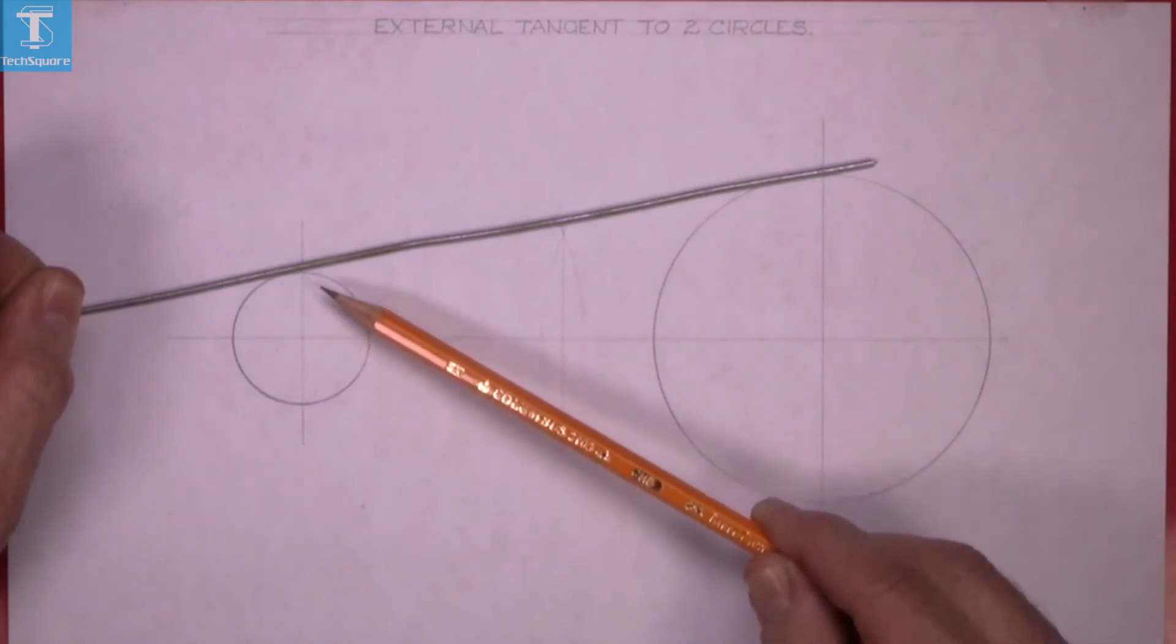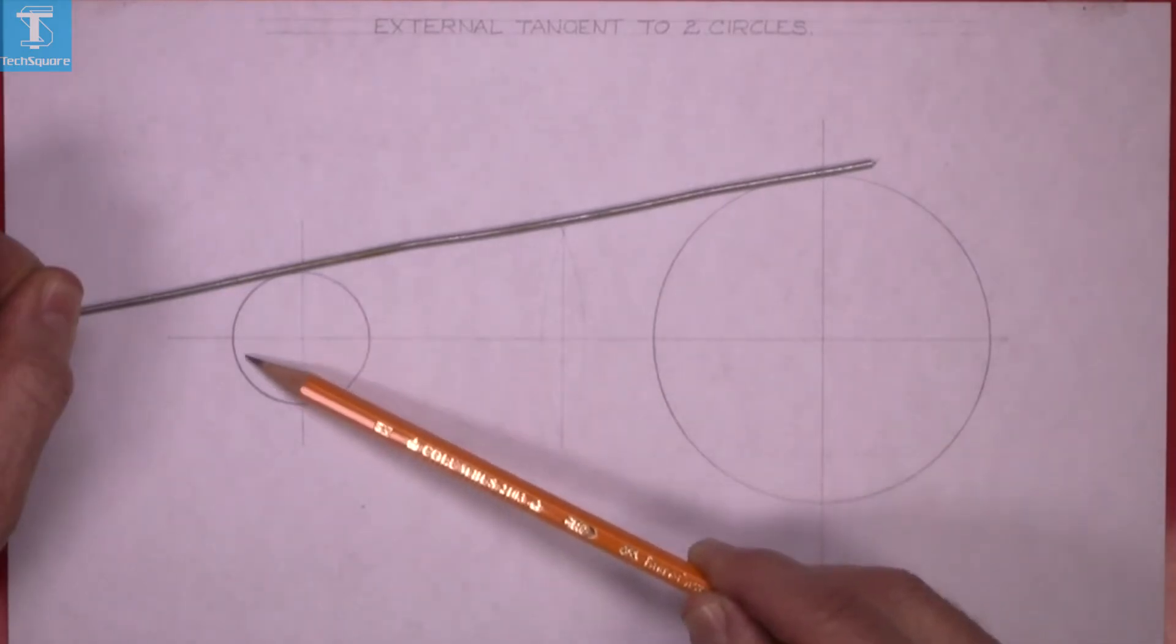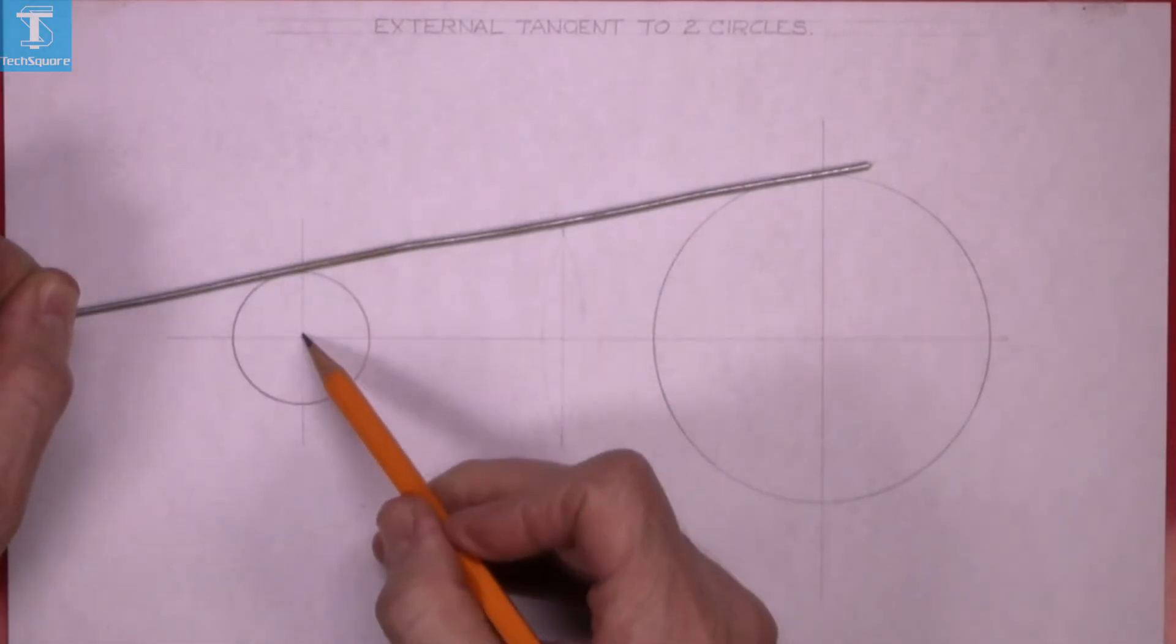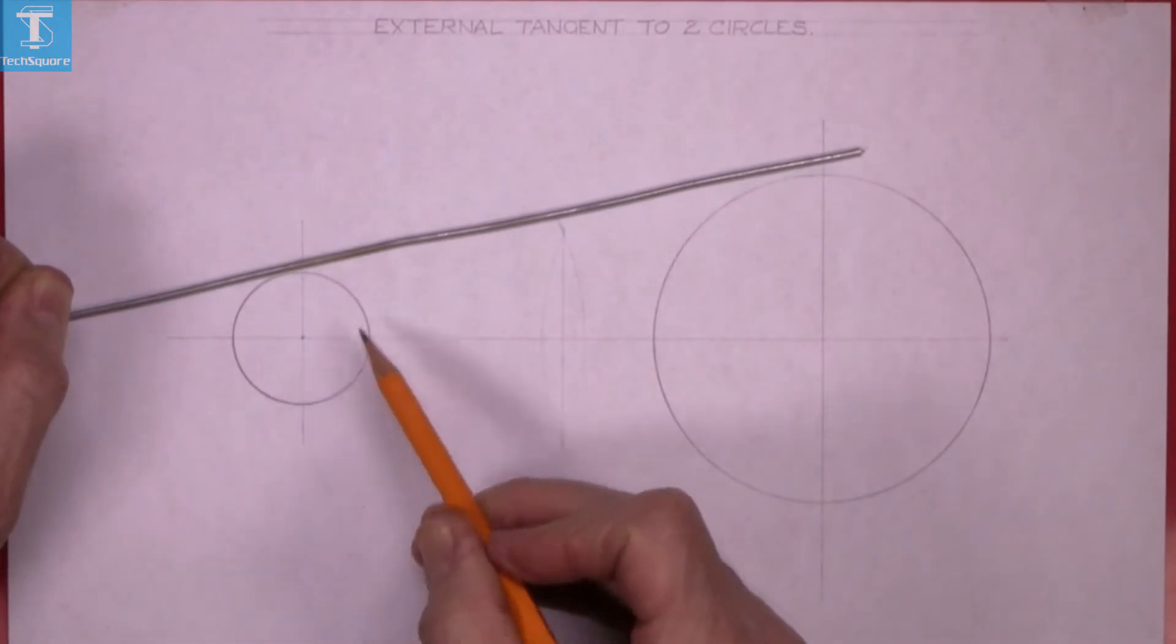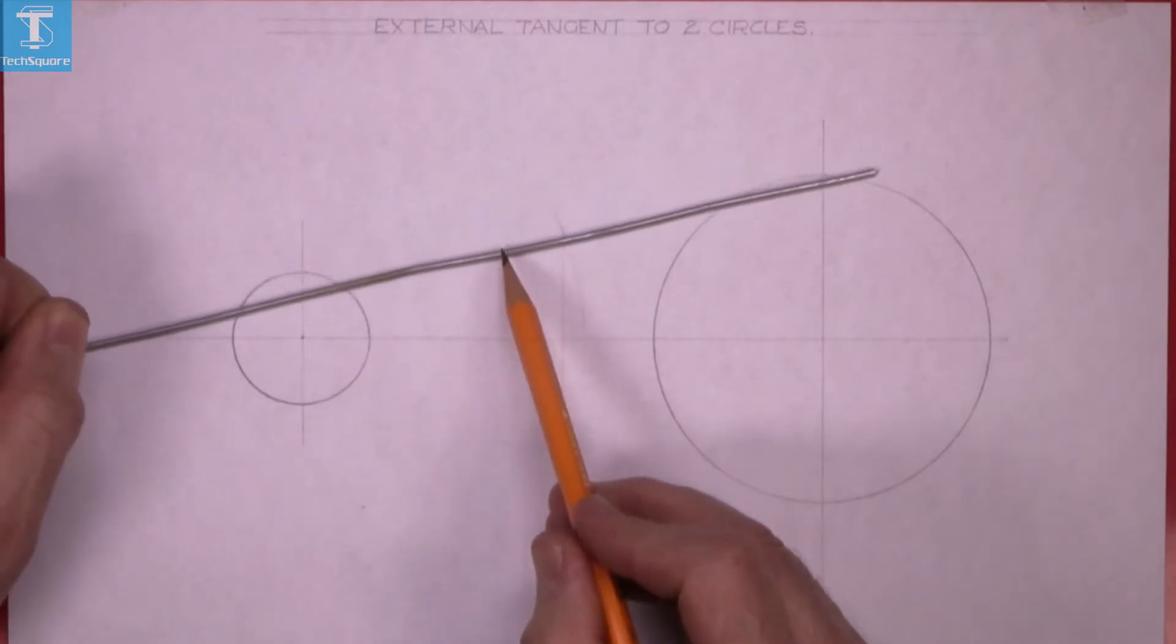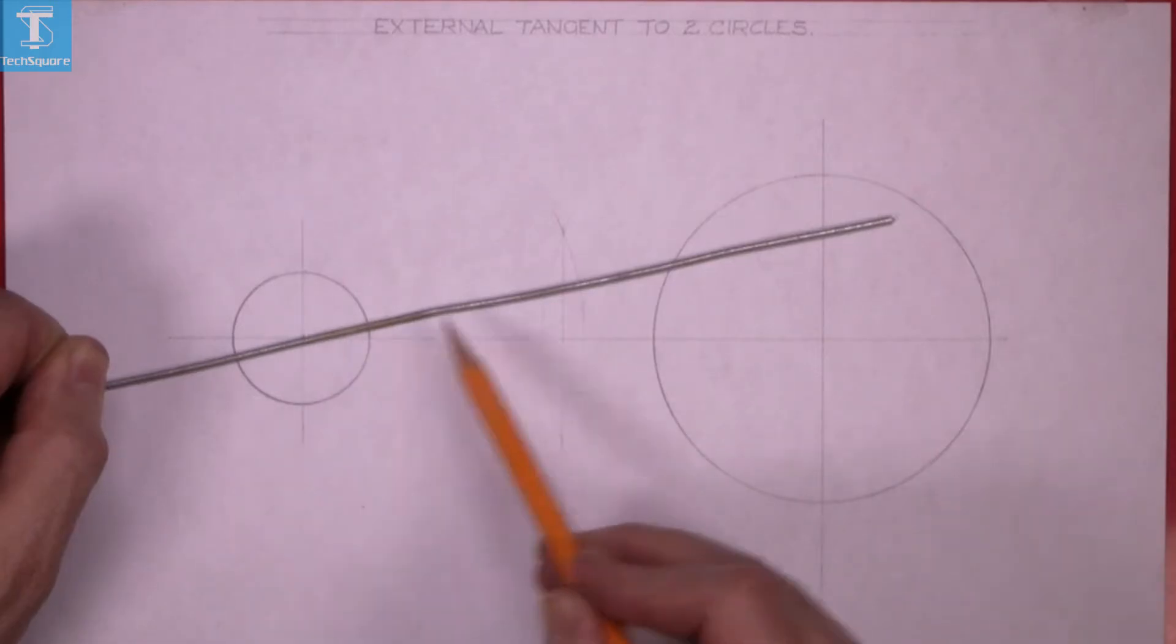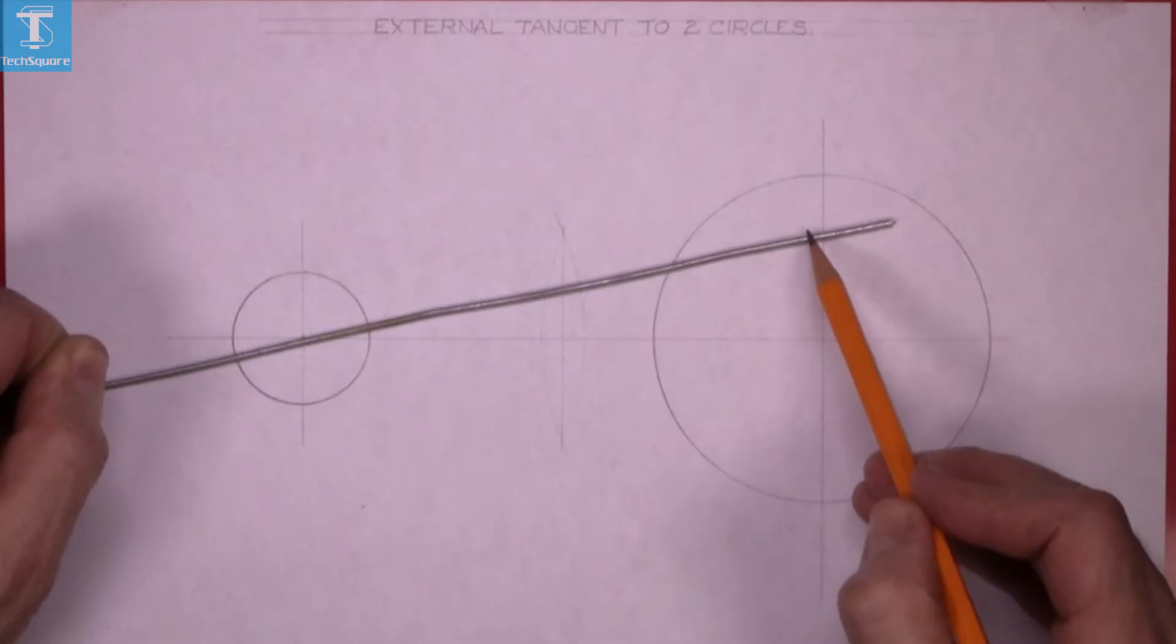To draw an external tangent, first we have to reduce the small circle to a point. That means the circle will be reduced to a point, but the tangent is pulled in that distance. The distance there is the radius of the small circle. Set the compass to that distance and put the point of the compass at the top.